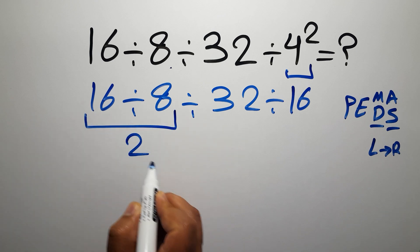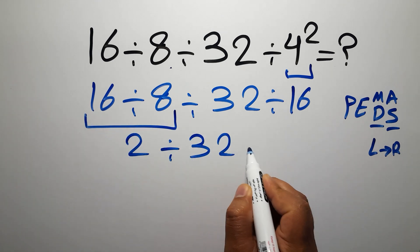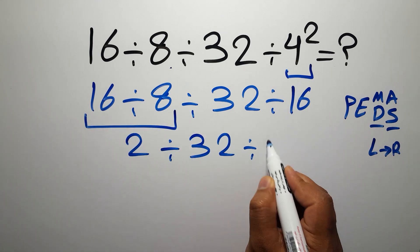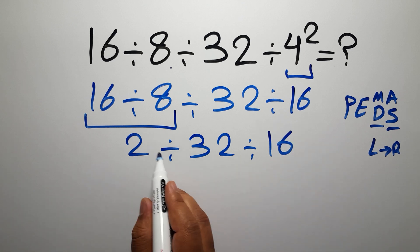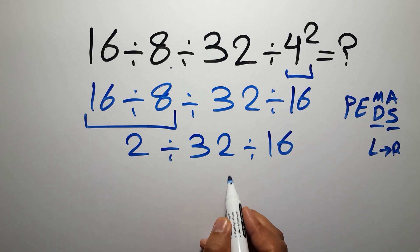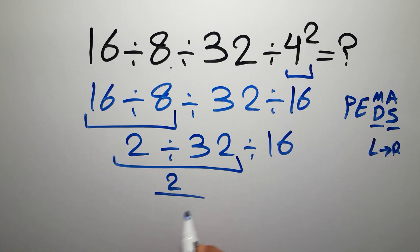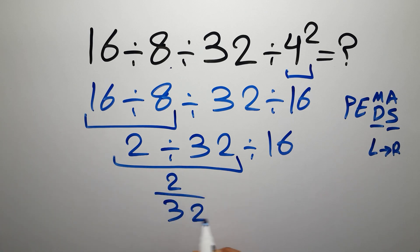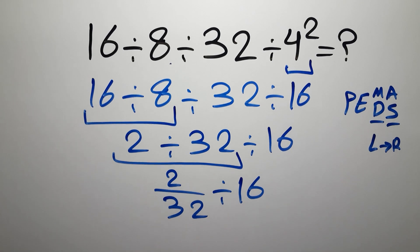So we have 2 divided by 32, divided by 16. Now we have to do this division: 2 divided by 32. We can write 2 over 32, and then divided by 16.